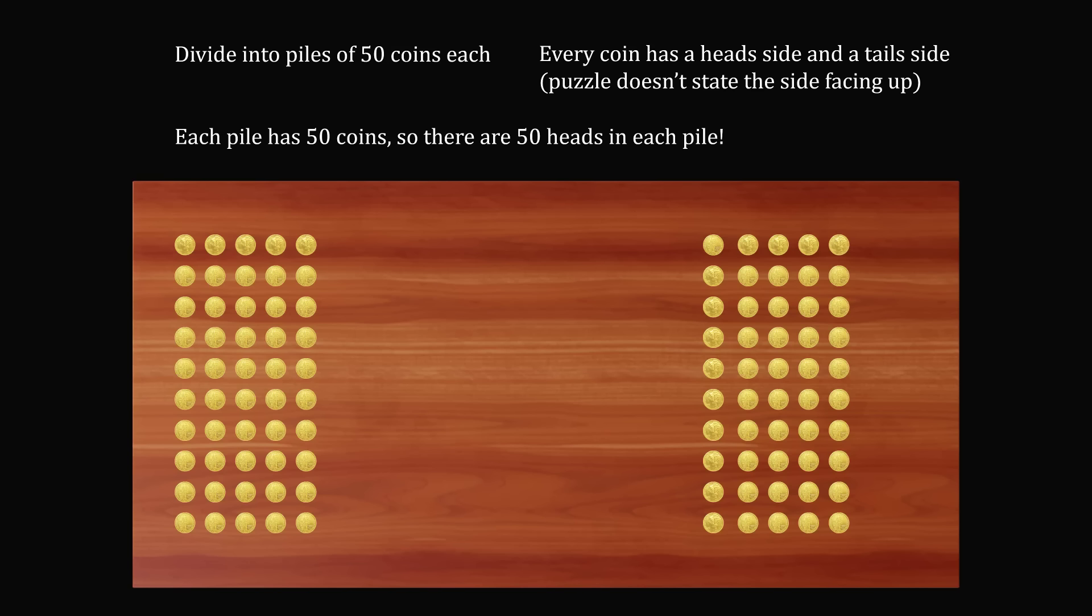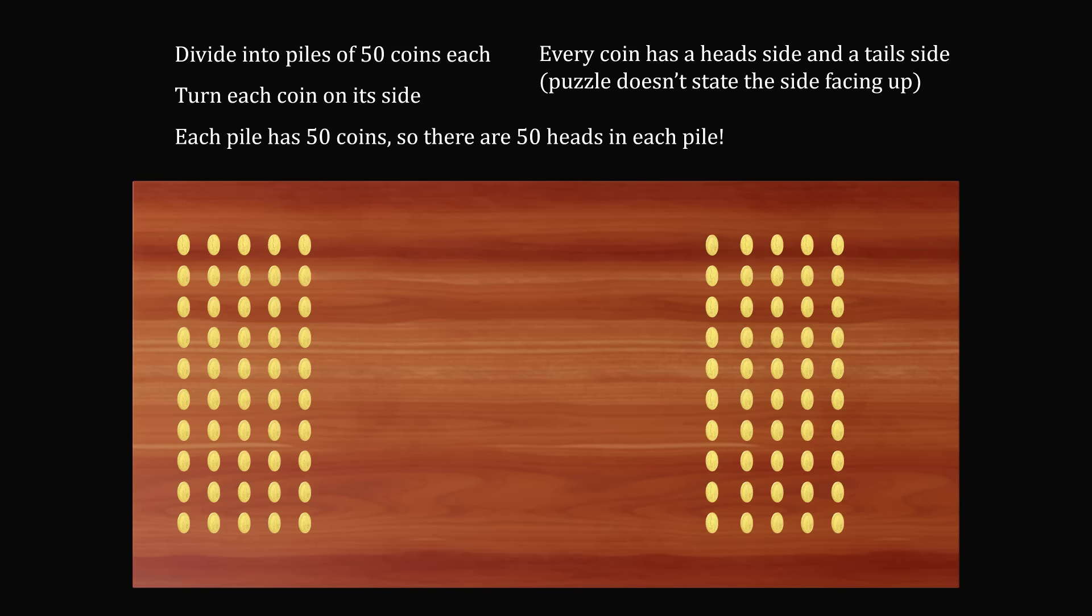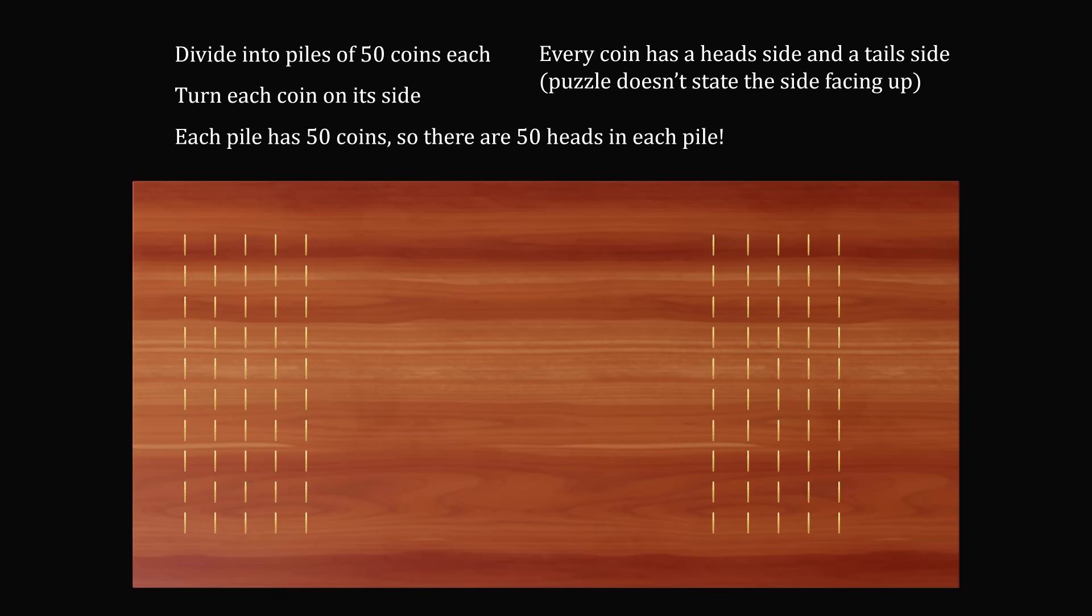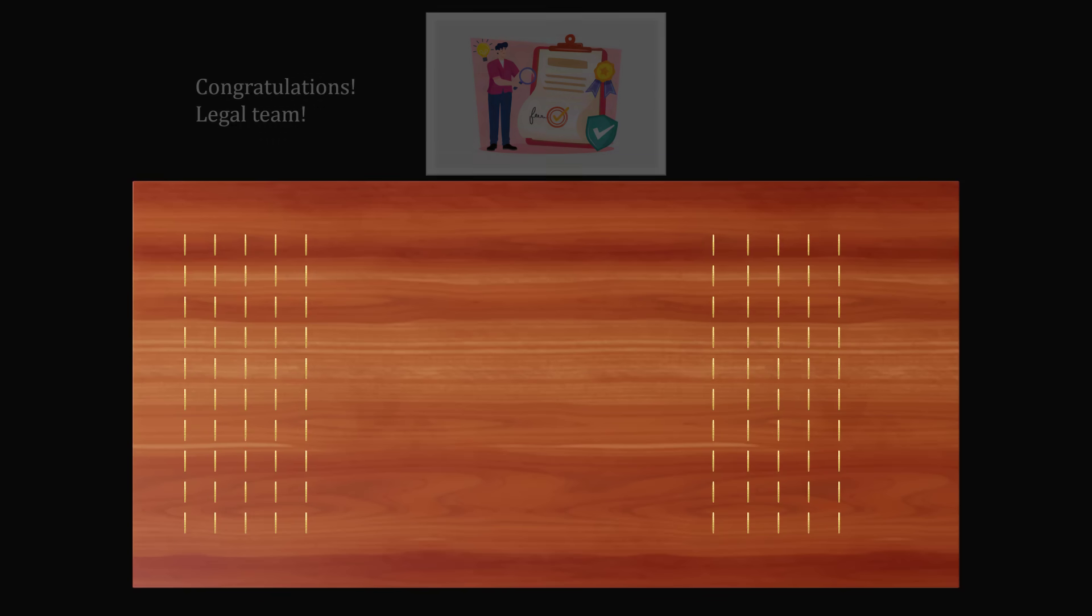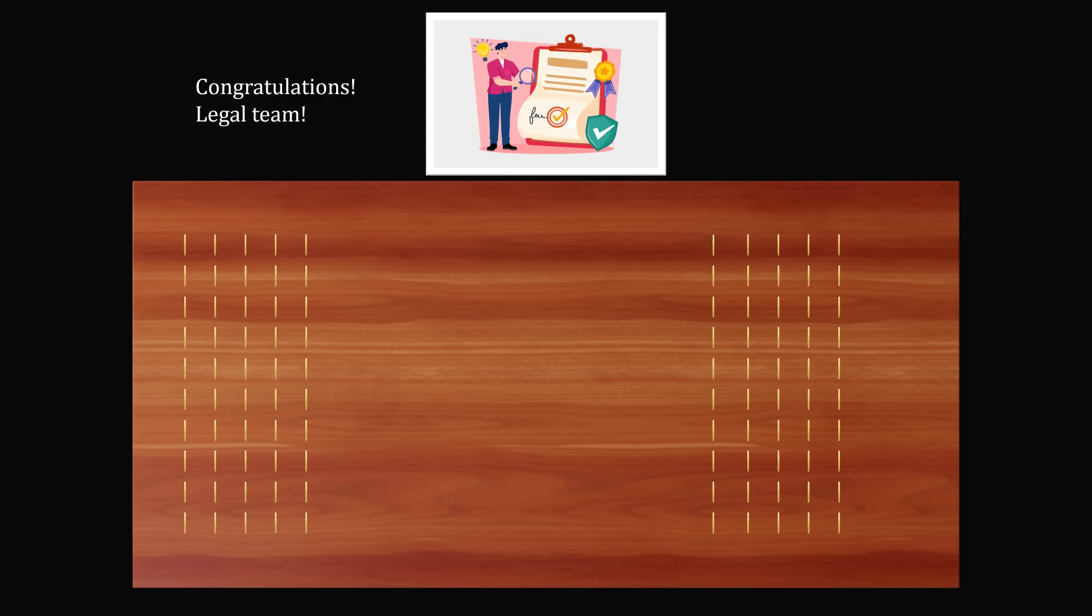So if this technicality doesn't impress you, it didn't impress me, because usually we refer to the side of a coin as the side that's face up. Don't worry! There is another clever loophole around this. You could just turn every single coin on its side. There's nothing in the puzzle that prohibits this. So if you thought about the problem this way, then a congratulations is in order. Perhaps you would be a very good candidate for the legal team looking for every single loophole.